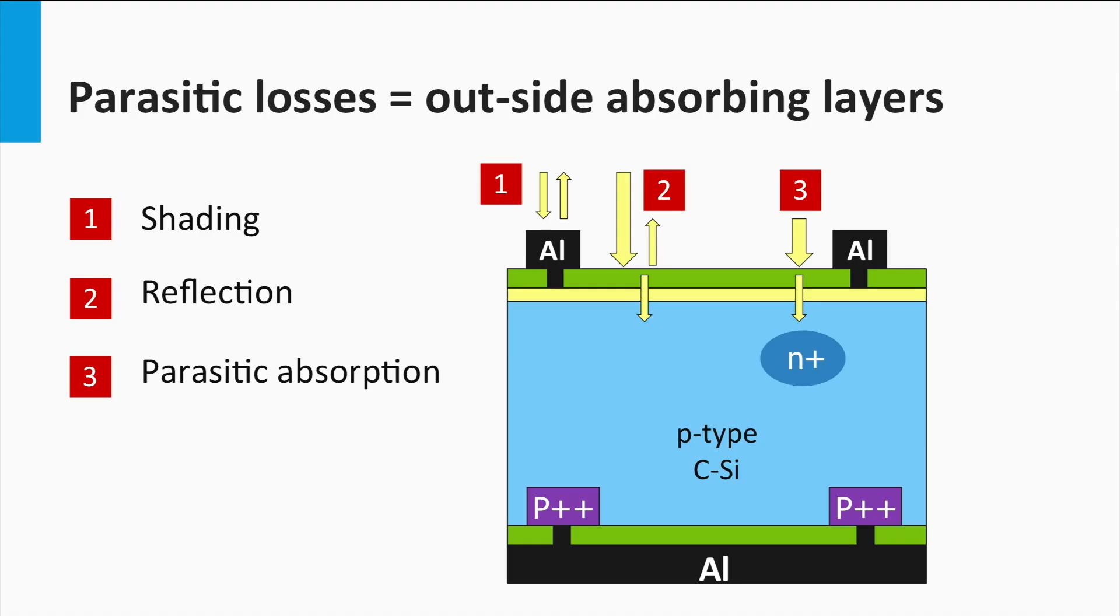A third optical loss mechanism is parasitic absorption losses in the non-active PV layers. In this example, the green top layer can be an anti-reflection coating or a passivation layer to reduce the number of defects at the surface of the emitter layer. If this layer absorbs photons, these photons will not contribute to charge carrier generation that will be collected at the contacts. This is what we address as parasitic absorption.